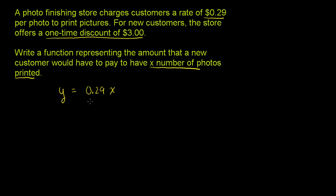But they're asking about a new customer. They say that the new customer gets a one-time discount of $3. So a new customer will pay 0.29x minus $3. This is a simplified version of a function that describes what a new customer would pay.